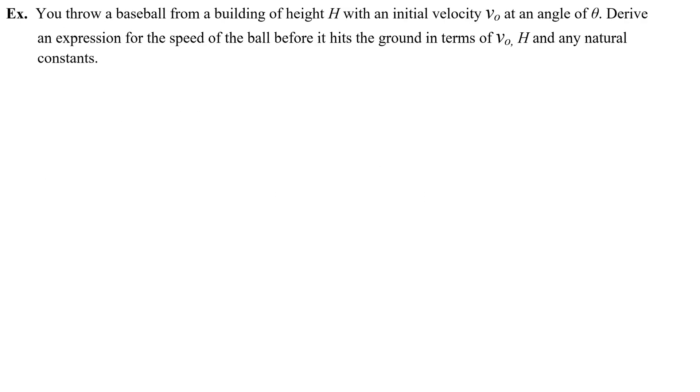You throw a baseball from a building of height H with an initial velocity V₀ at an angle of theta. Derive an expression for the speed of the ball before it hits the ground in terms of V₀ and H and any natural constants. This is just the exact same problem that we did, but now it's AP style. Here's V₀, there's some angle theta that it makes. It's at a height of H. I'll set this to zero so that I can easily see the initial height is H, the final height is zero.